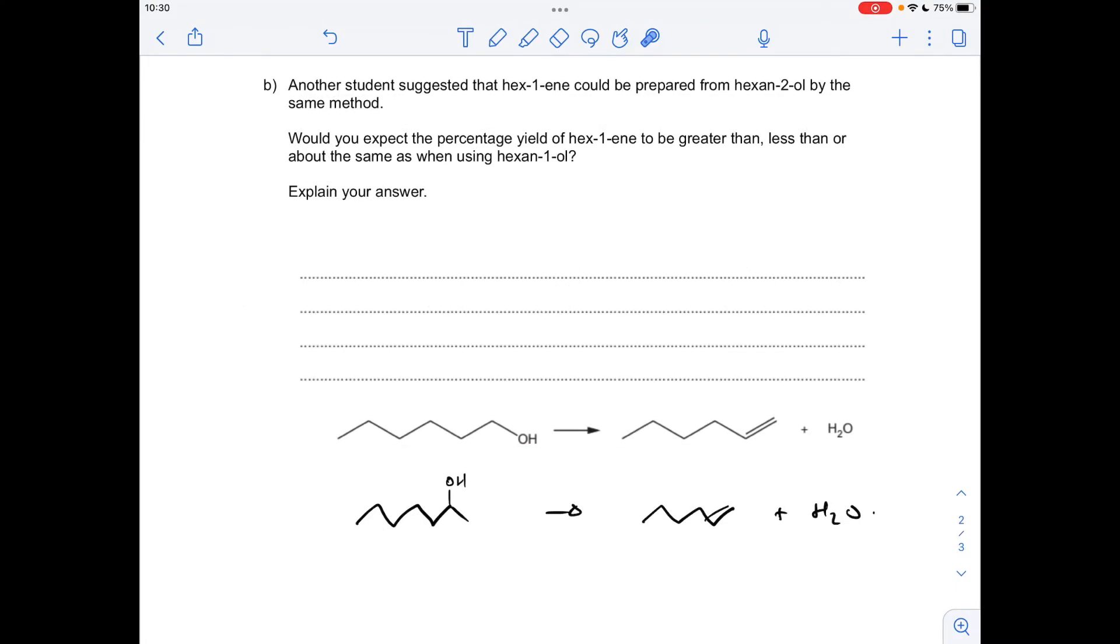So moving on to the last part of the question, there's the equation that's already been given, so the dehydration of hex-1-ol will make hex-1-ene and water. Hex-2-ol also gives hex-1-ene as a product because we've got an adjacent hydrogen here that we can remove, as well as the OH group and put a double bond there. However, we've got adjacent hydrogens here as well, so we can also make hex-2-ene. So as a result of that, our yield is going to be lower.